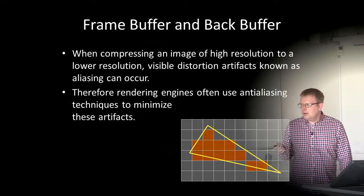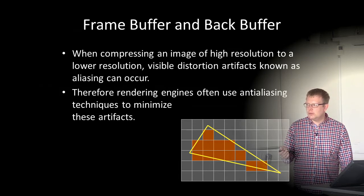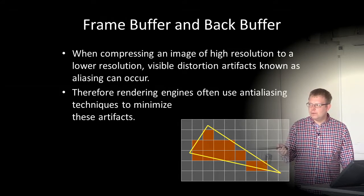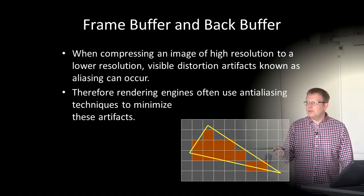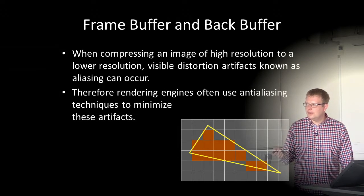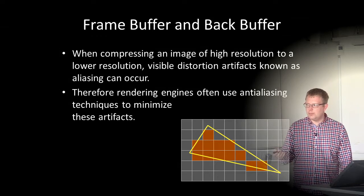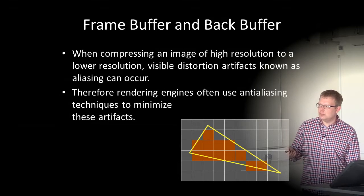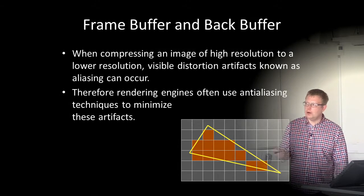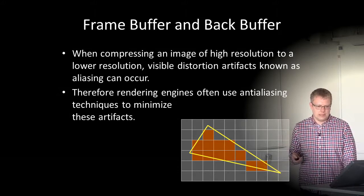Consider this yellow triangle in the figure. If we compress it to a lower resolution grid, it will not really look like a triangle anymore — it will look very weird, like the brown shape shown here. So we need some way of smoothing out objects to fit a lower resolution, and that's called anti-aliasing.